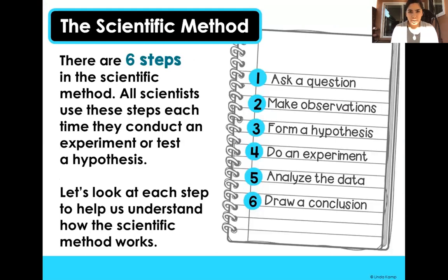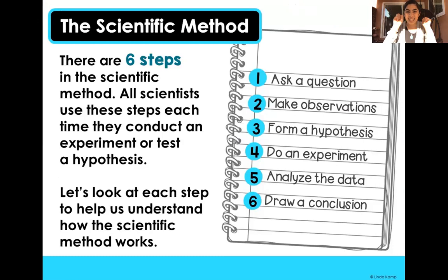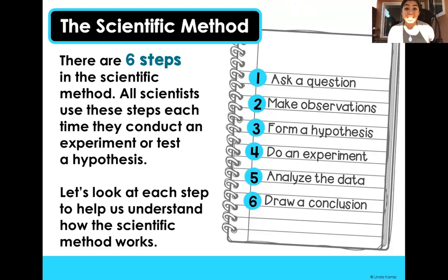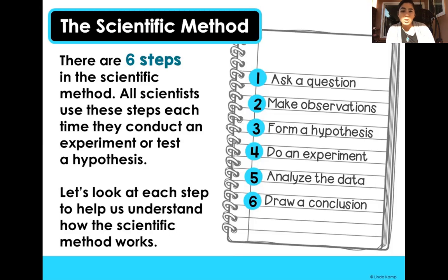The scientific method has six steps. Boys and girls, how many steps does the scientific method have? Six — a hand and a thumb! The scientific method has six steps. All scientists use these steps each time to make an experiment or to test a hypothesis. A hypothesis is a question that we ask. Scientists always use this method — it's like making pizza, you have to follow the steps. You use the scientific method when you're trying to do an experiment.